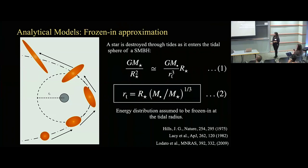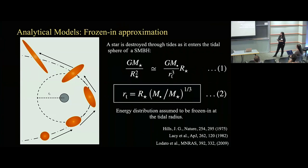The cartoon here shows a star initially at large distances from the black hole, perfectly hydrostatically balanced — a perfect sphere. As it comes on its parabolic trajectory close to the black hole, it starts getting more and more distorted as it comes within the tidal sphere. As it reaches the pericenter, the energy distribution established there is assumed to be frozen in, and the particles constituting the star thereafter evolve on ballistic trajectories in the potential of the black hole. To get the condition for the star being destroyed at the tidal radius, you equate the self-gravity of the star at its surface to the tidal field of the black hole, yielding the boxed expression for tidal radius, which depends on the mass of the star, the mass of the black hole, and the stellar radius.